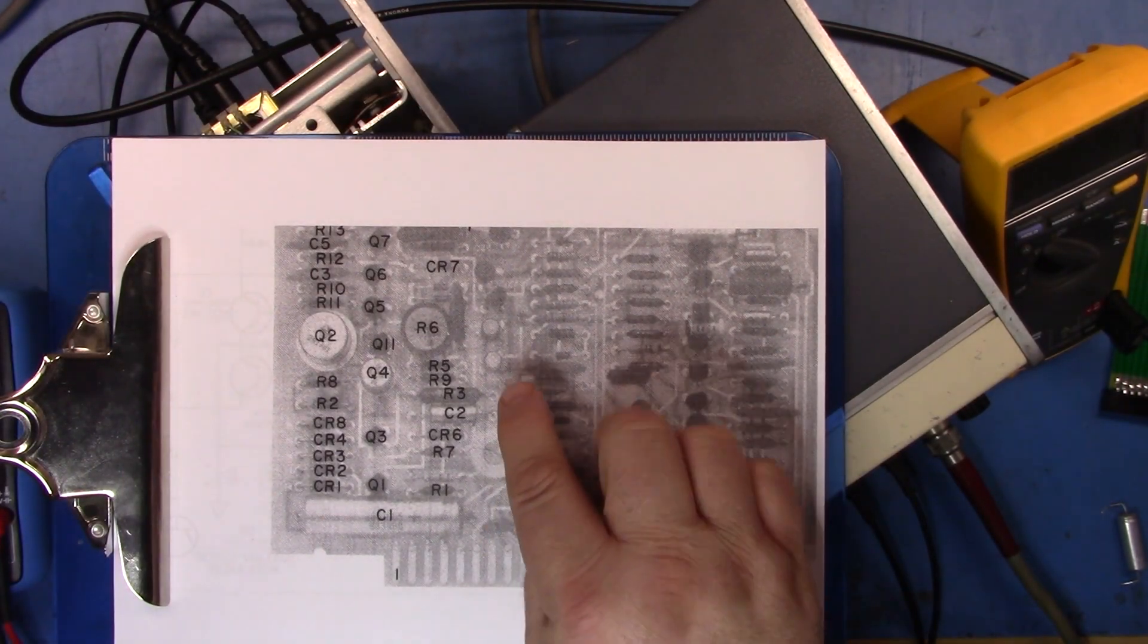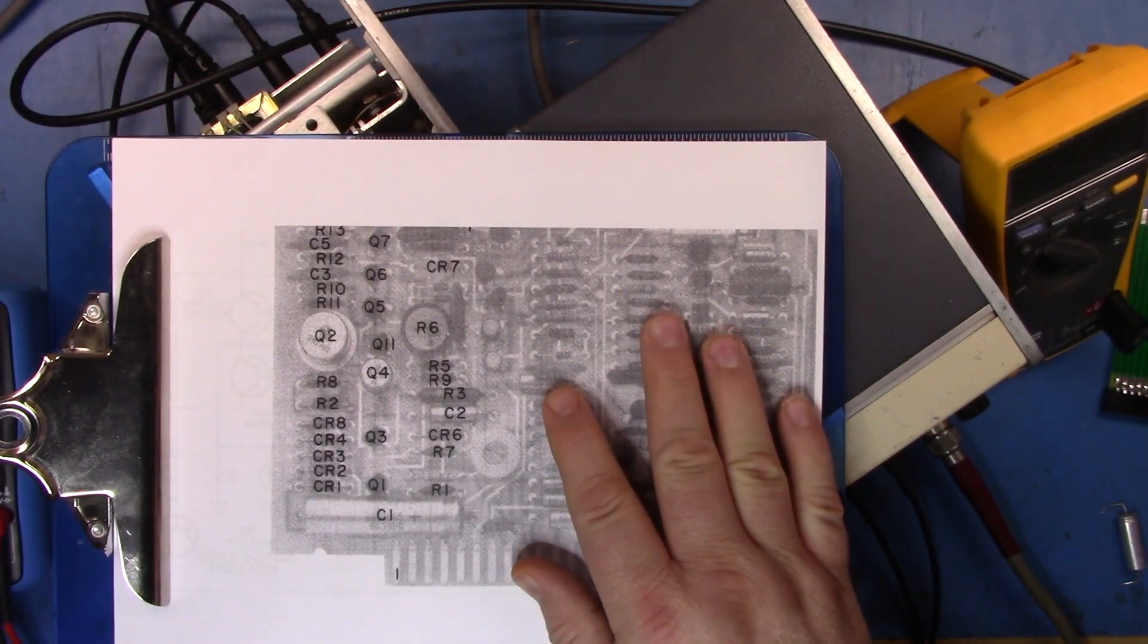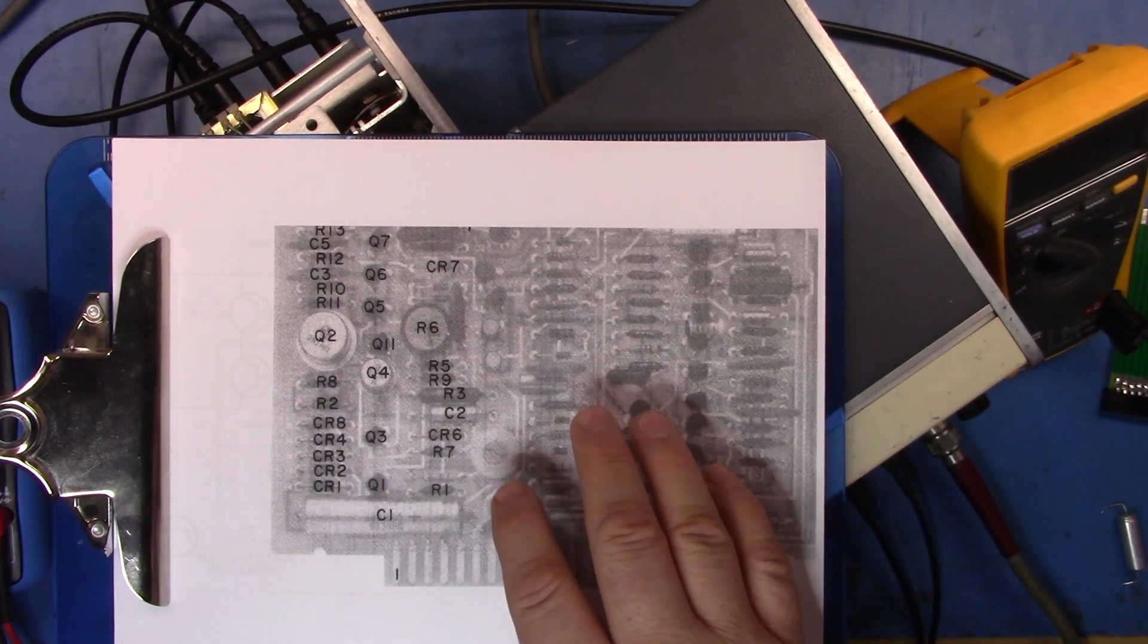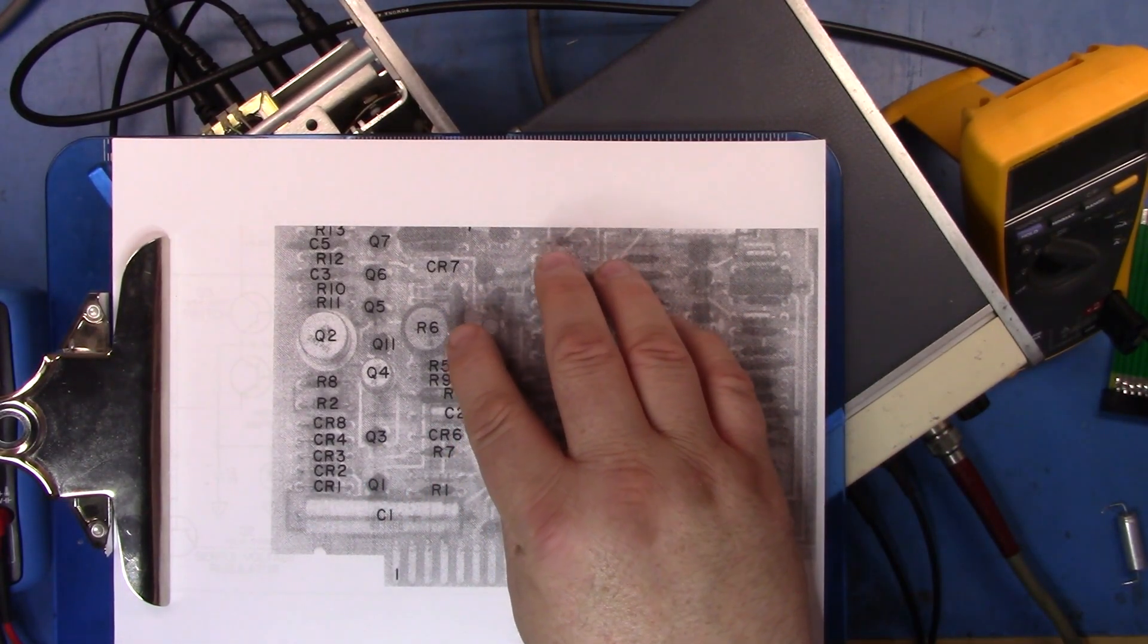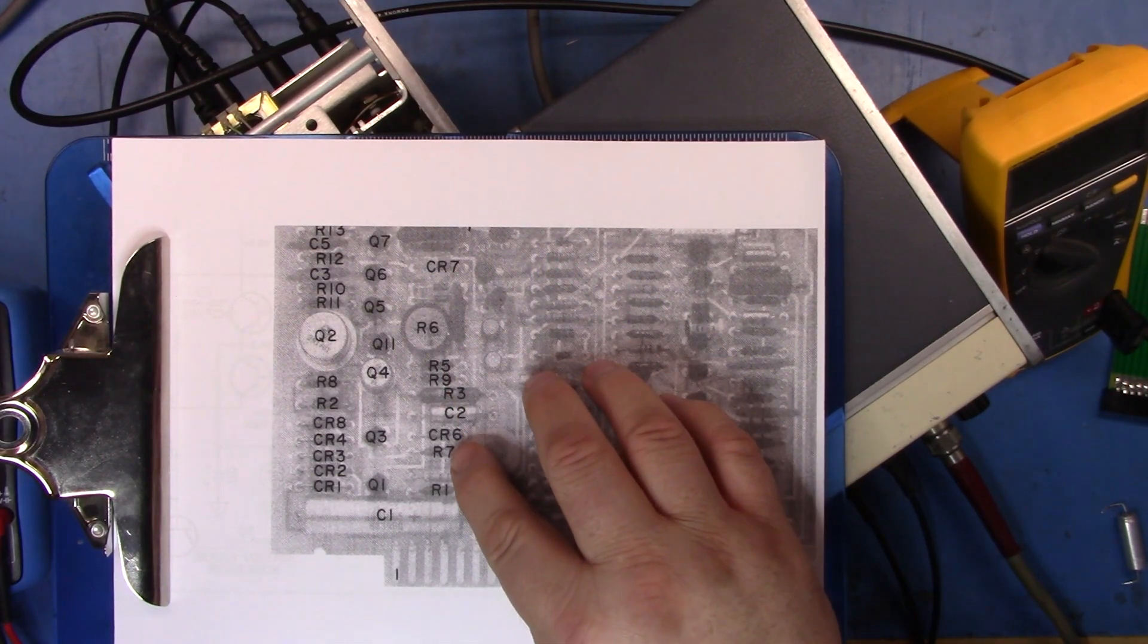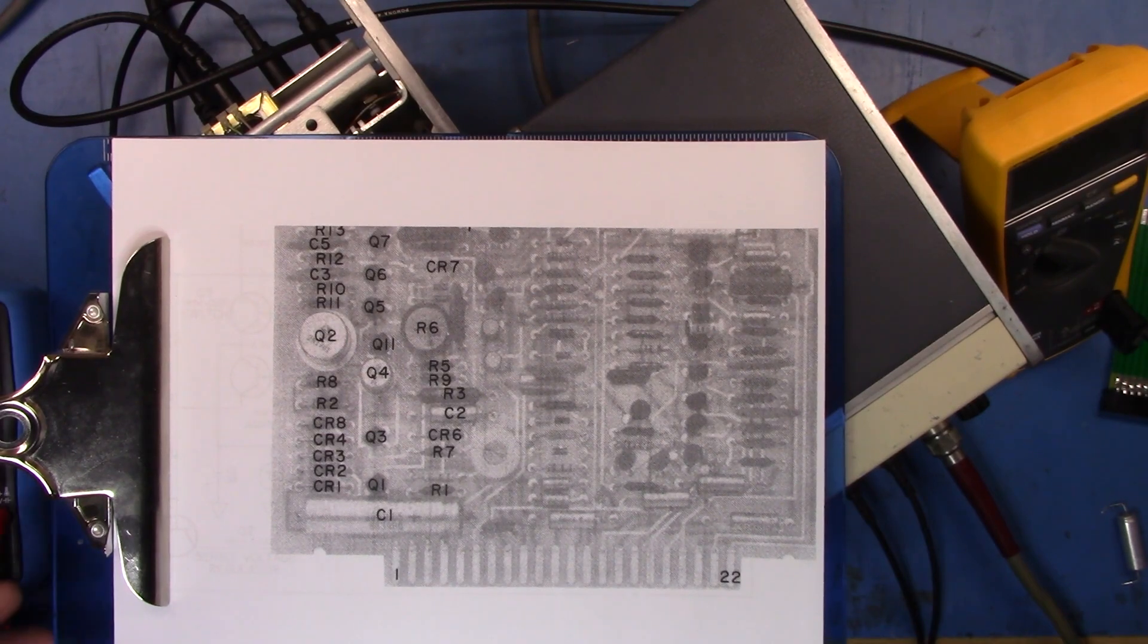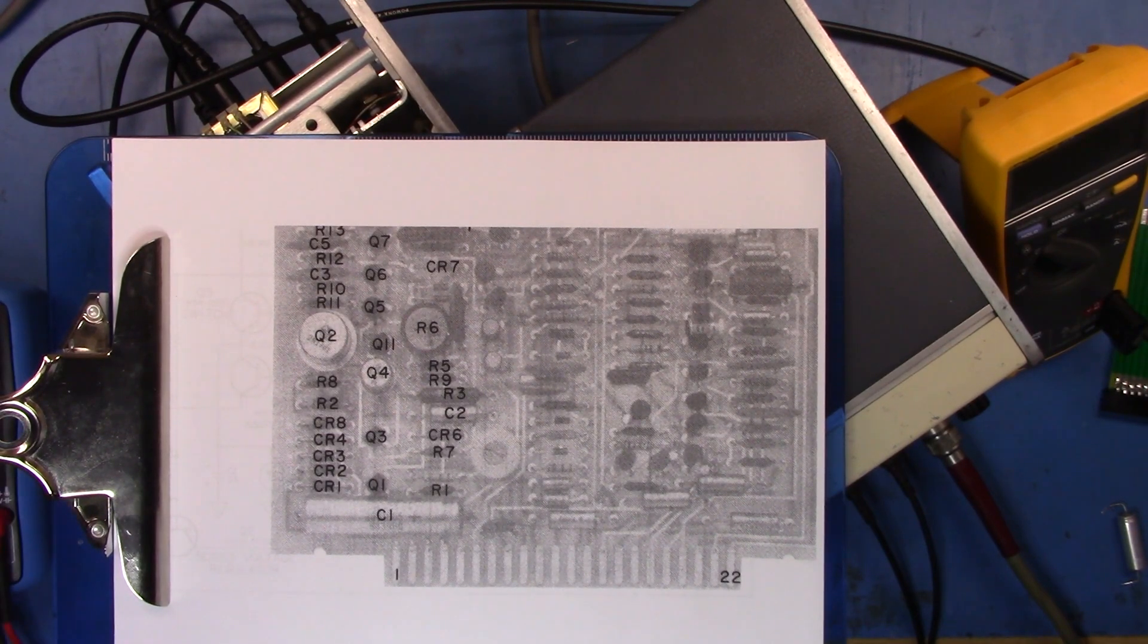Before we look at the schematic though, this is the relevant part of the actual board. I have the board in the unit right now. But you can see there's R5, R7 and R6 is an adjustable potentiometer that you would use during the calibration process and the adjustment process.